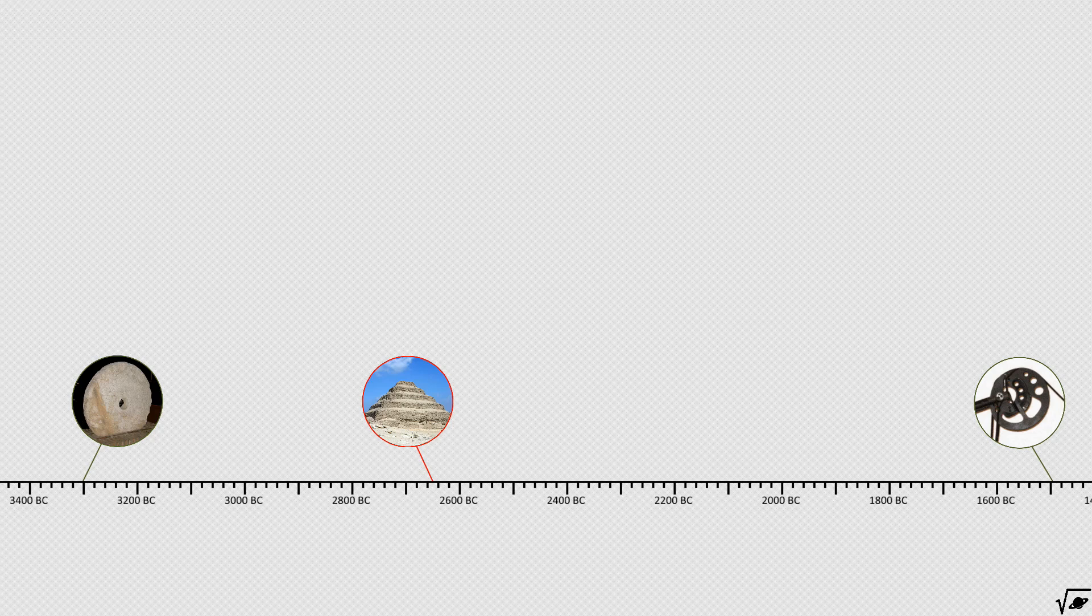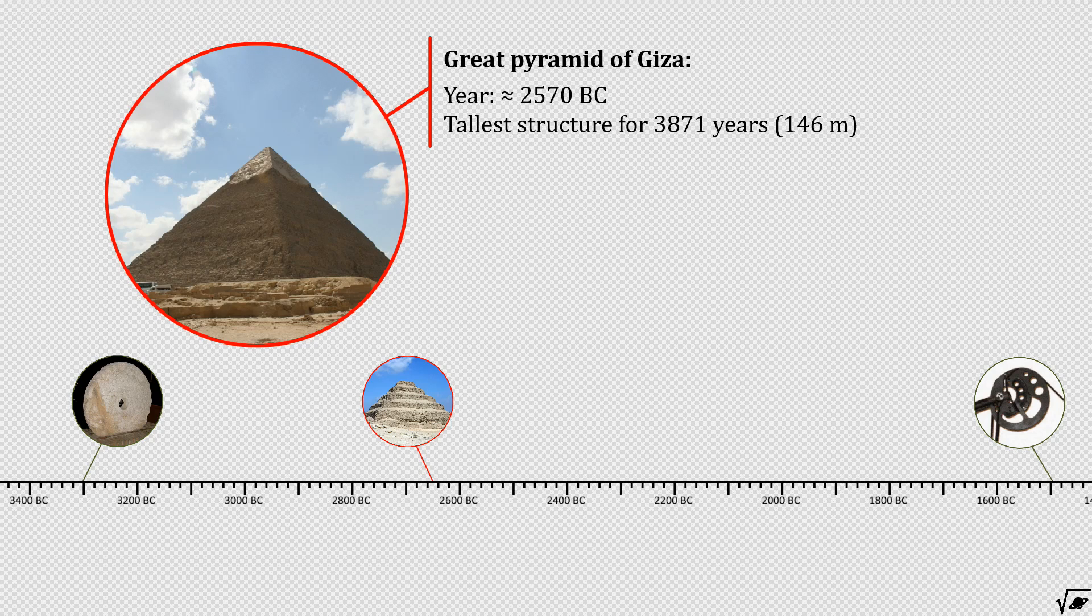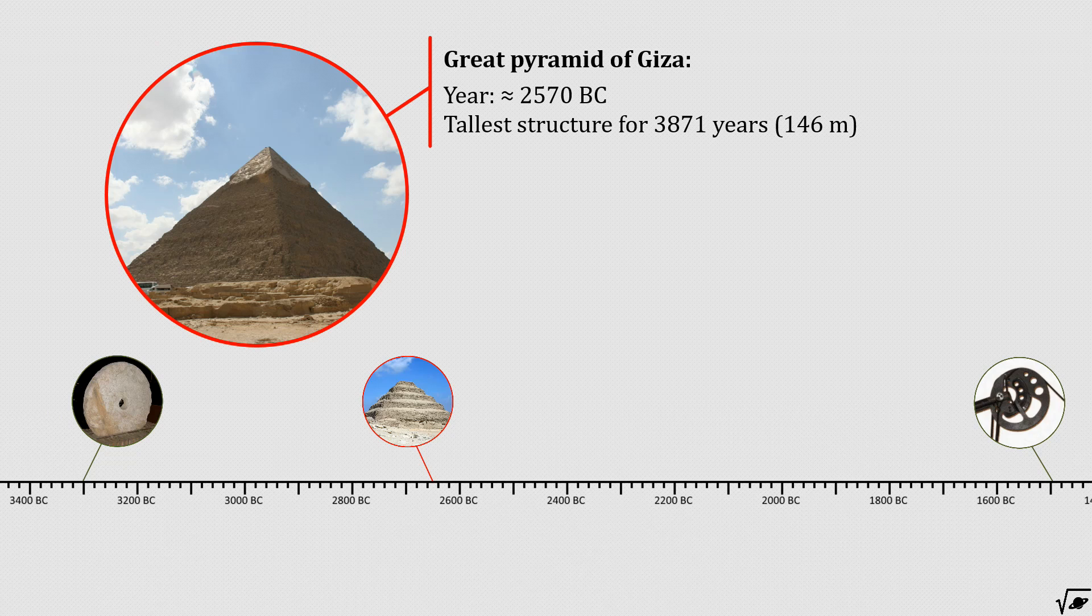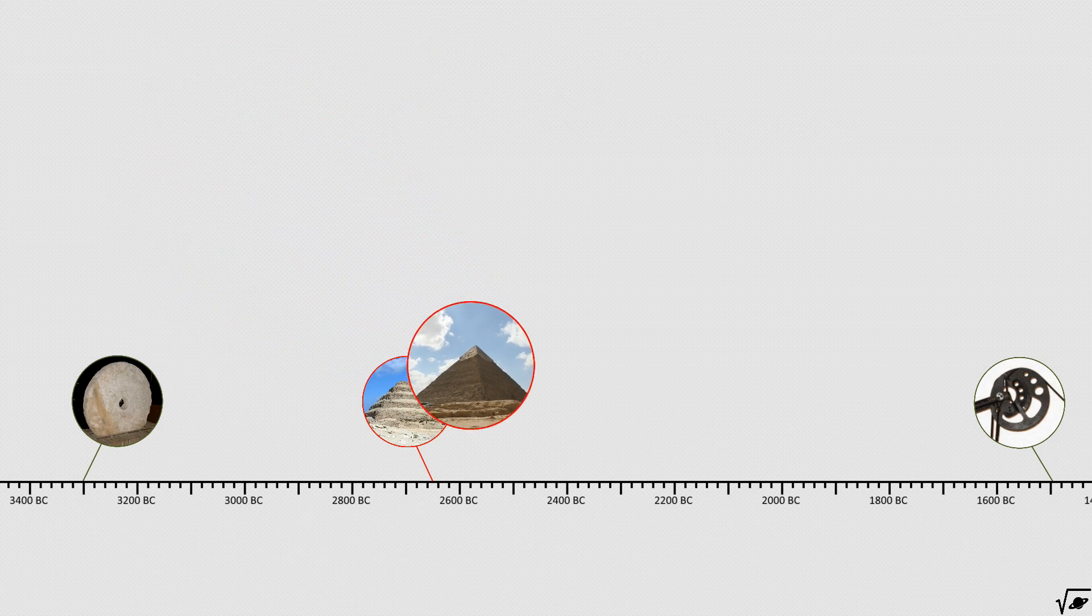Not even 100 years after the construction of Djoser's pyramid, the great pyramid of Giza was built, world's tallest structure for almost 4000 years. From the seven wonders of the ancient world, this structure is the only one still standing today.